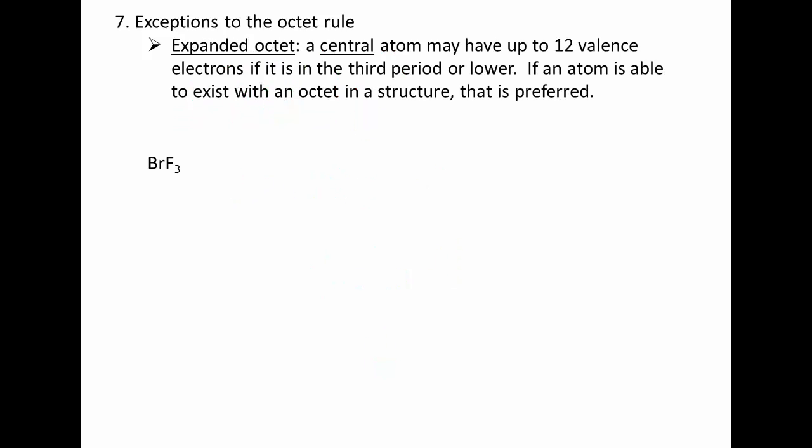The other exception would be expanded octets. These are atoms that are central atoms that are happy with more than eight valence electrons. So a central atom can actually have up to twelve valence electrons if it is in the third period or lower. So you need to look up that central atom and see if it's low enough on the periodic table, if it's a big enough atom where it can compensate and hold up to twelve valence electrons.